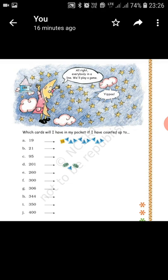Now children, Chanda Mama wants to play a game with you. The question is: which cards will Chanda Mama have in his pocket when he has counted up to a certain number? First one: counting up to 19. In counting up to 19, he has one yellow card of 10 and nine blue cards of one each.